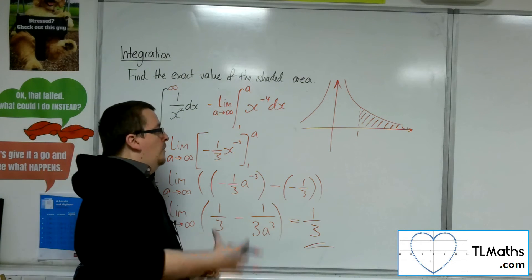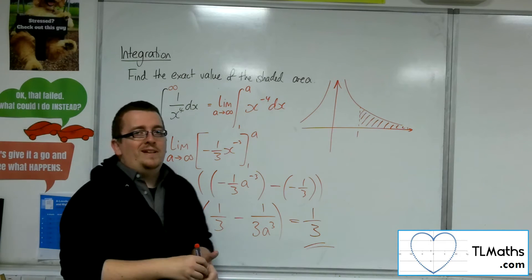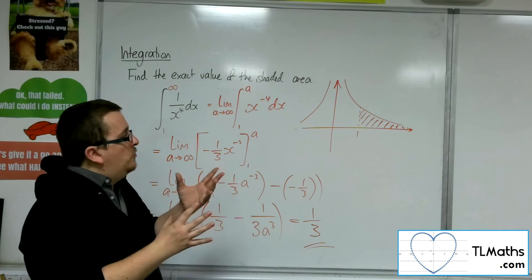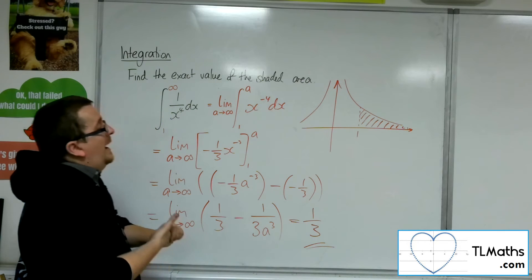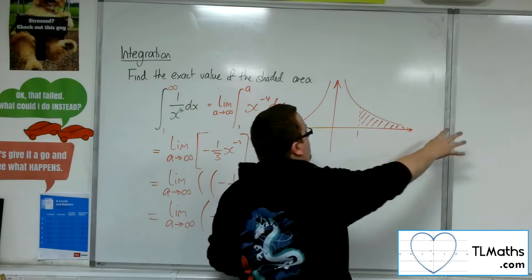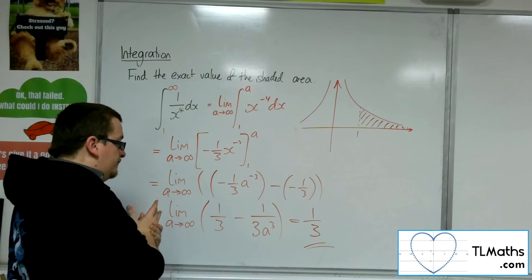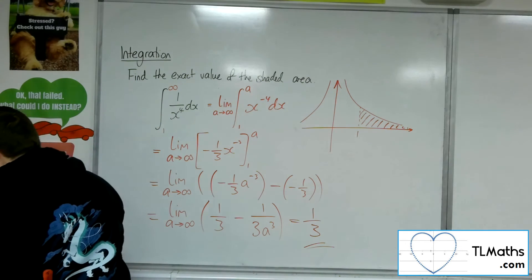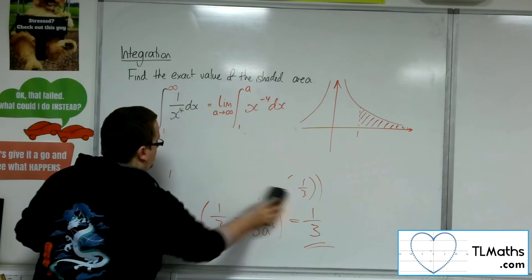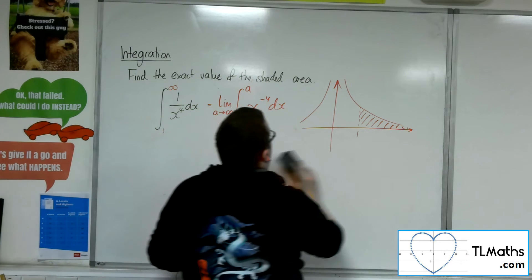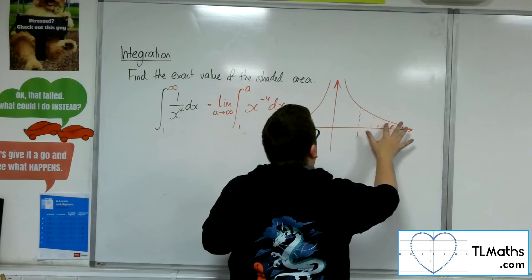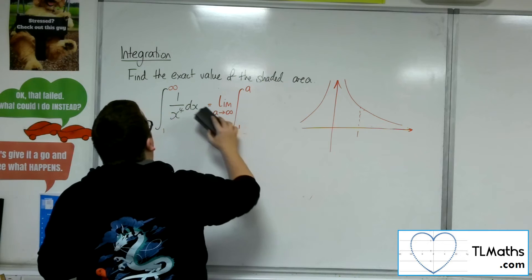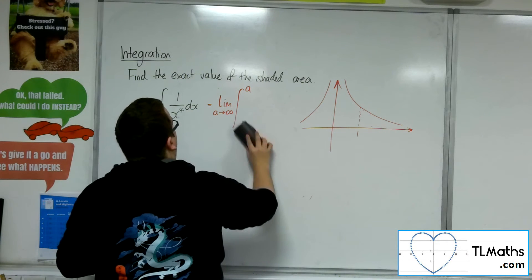Not only do we have the interesting behaviour that we cannot integrate over an asymptote, but we are able to integrate to infinity and work out an area like that. Now, you can also deal with integrating between 0 and 1.